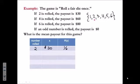If a 4 is rolled, that's a payout of $60. And the probability of getting a 4 would be again 1 out of 6. If a 6 is rolled, the payout is $80. And the probability of rolling a 6 would be again 1 out of 6.